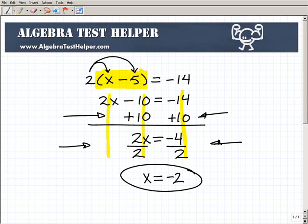And that's it. x equals negative 2. So it took us a few steps. The key thing was recognizing that we had to use the distributive property to kind of clear away those parentheses and get going.